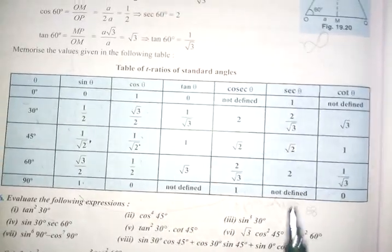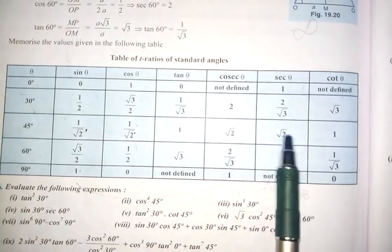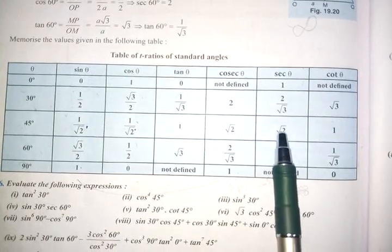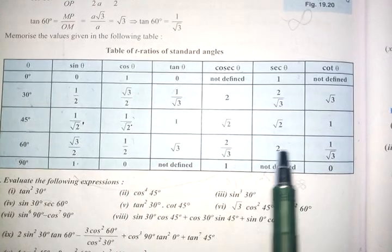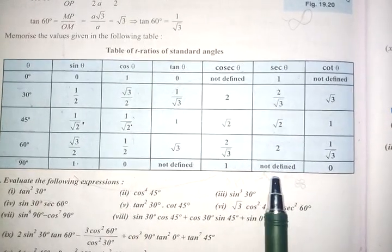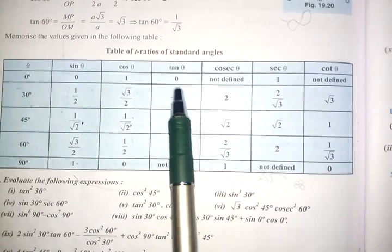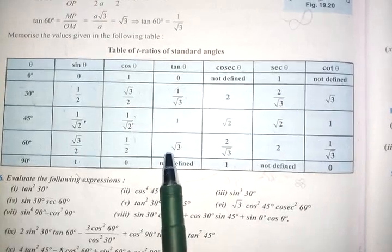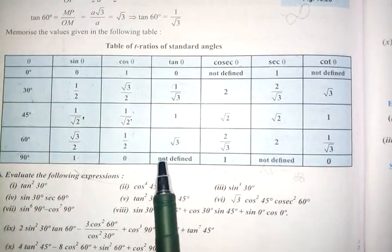Sec is the reciprocal of cos: opposite of 1 is 1; √3/2 becomes 2/√3; 1/√2 becomes √2; 1/2 becomes 2; and opposite of 0 is not defined. Cot is the reciprocal of tan: 0 becomes not defined; 1/√3 becomes √3; 1 stays 1; √3 becomes 1/√3; and not defined becomes 0.